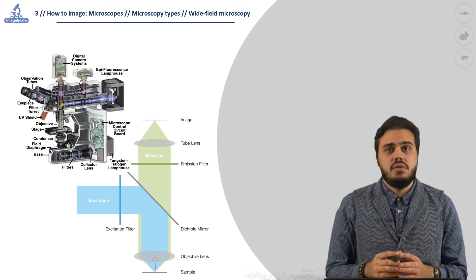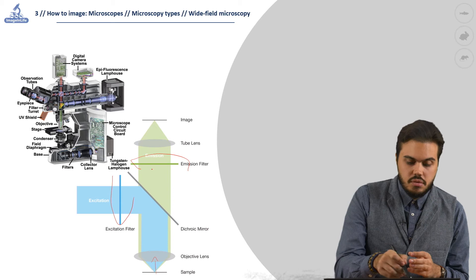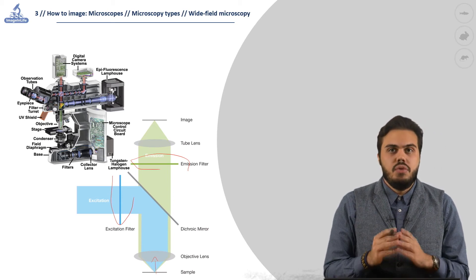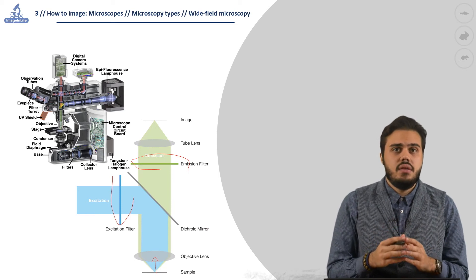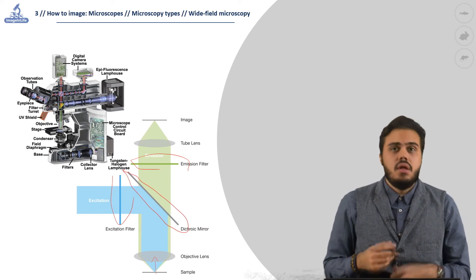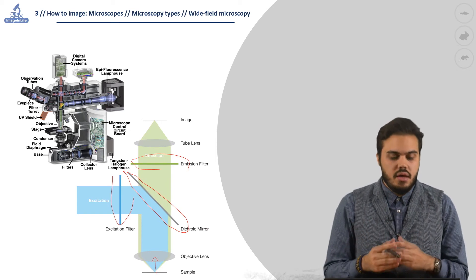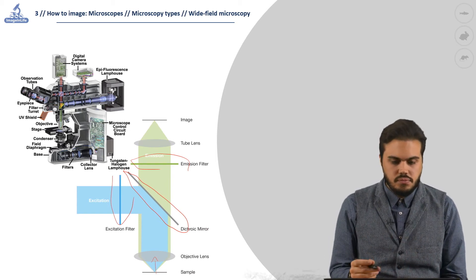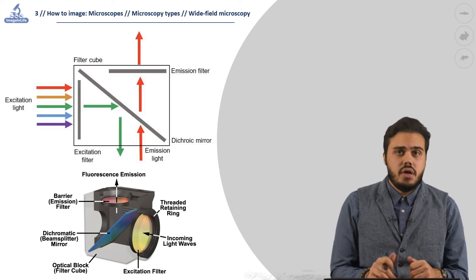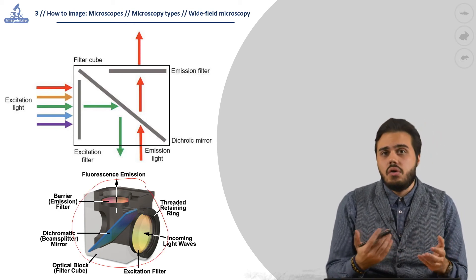The epifluorescence works thanks to the excitation and emission filters and the dichroic mirror that reflects the excitation light and lets the emission light proceed towards the camera and get acquired. Usually all these components are inserted in cubes that can be swapped based on the wavelength or color we want to observe.